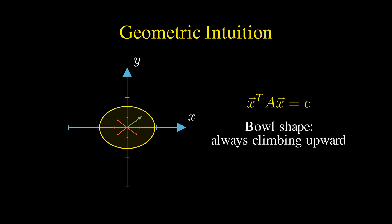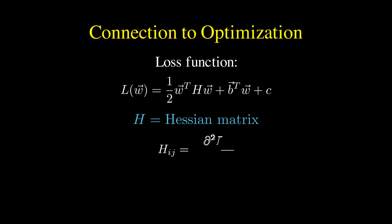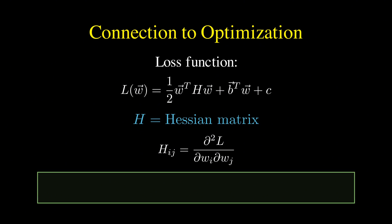This concept becomes essential when we think about optimization problems. Consider a typical loss function in machine learning that can be written as 1/2 w transpose Hw plus b transpose w plus c, where H is the Hessian matrix containing all the second partial derivatives of the loss with respect to the weights. If this Hessian matrix is positive definite, then we can guarantee that the loss function is strictly convex, which means there exists a unique minimum and we can find it reliably using gradient-based optimization methods.